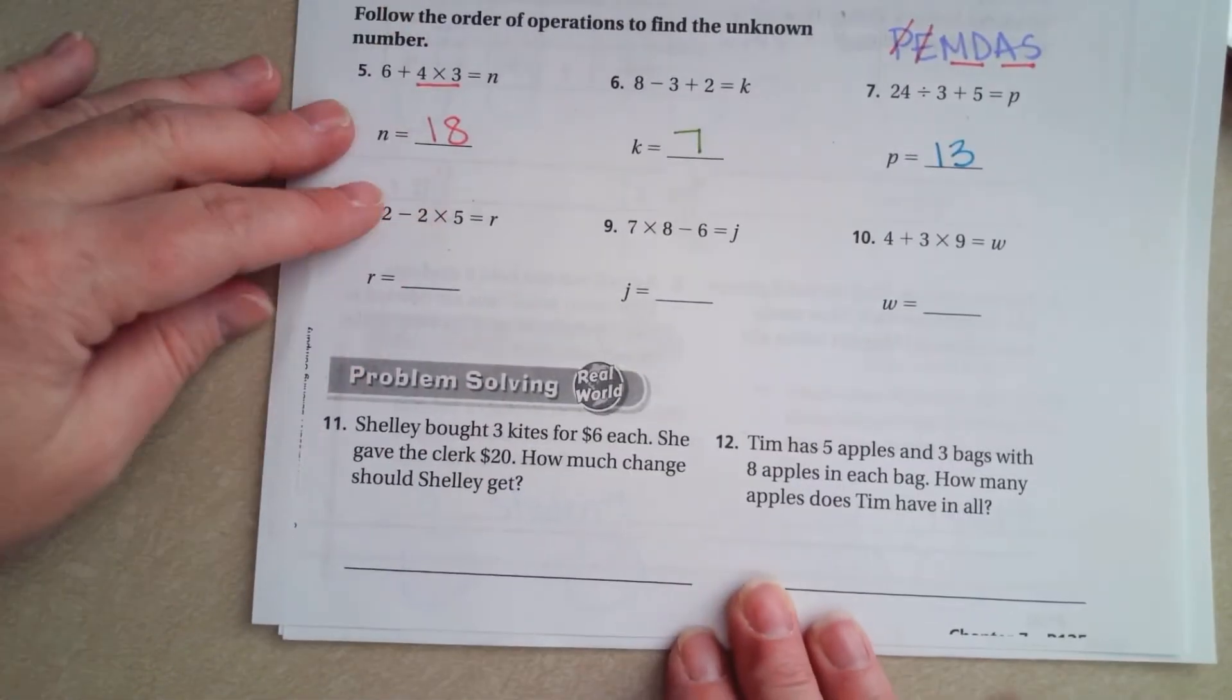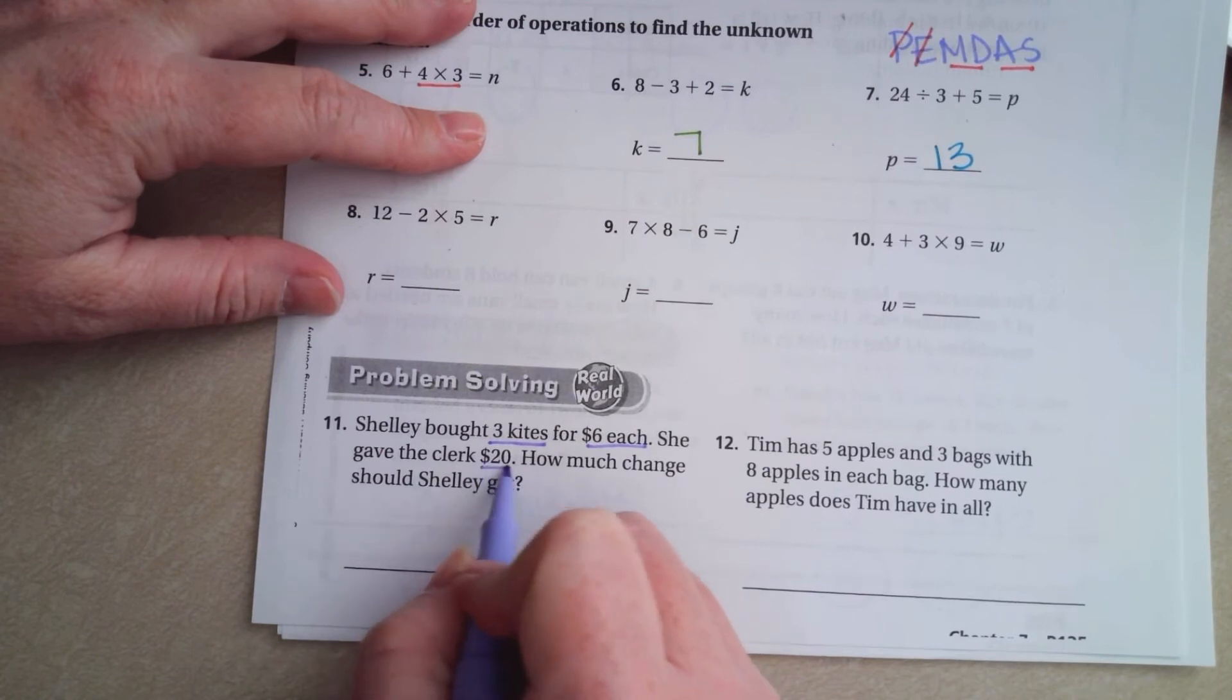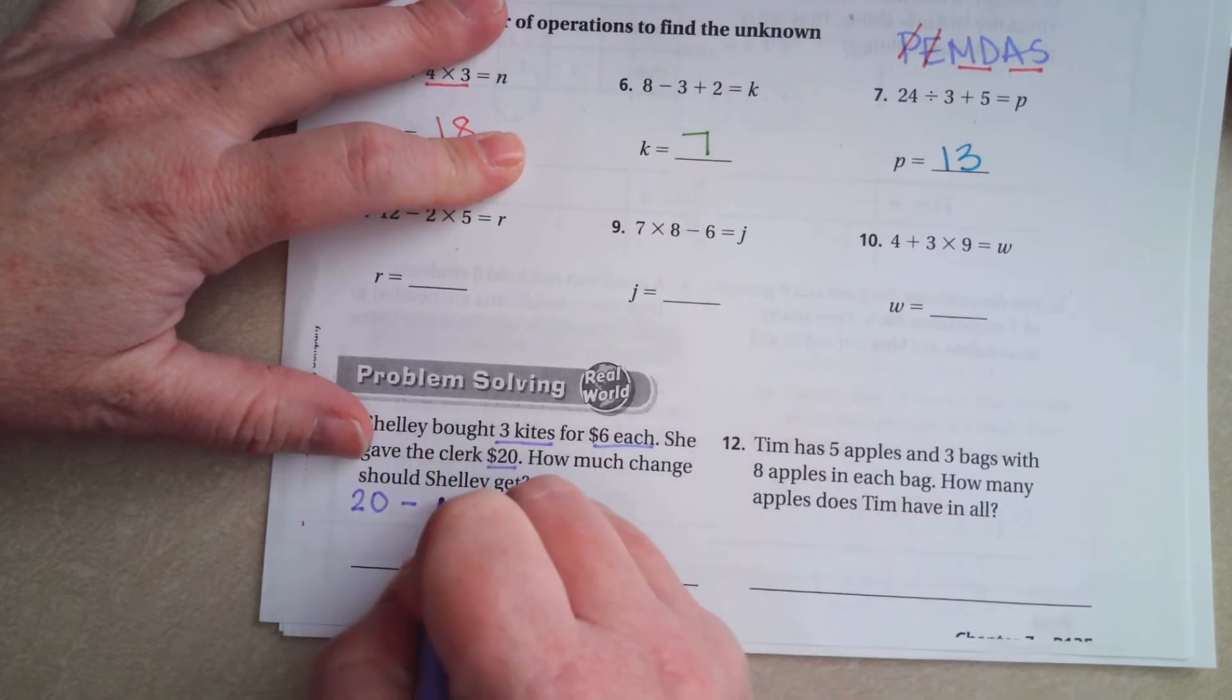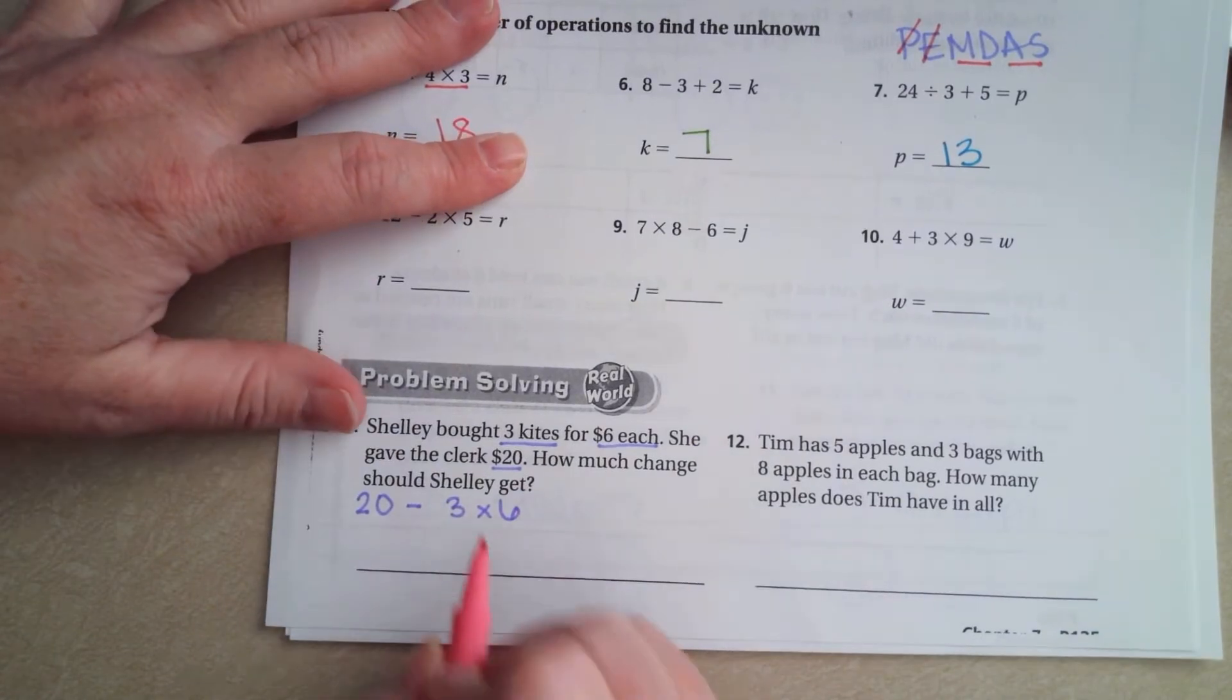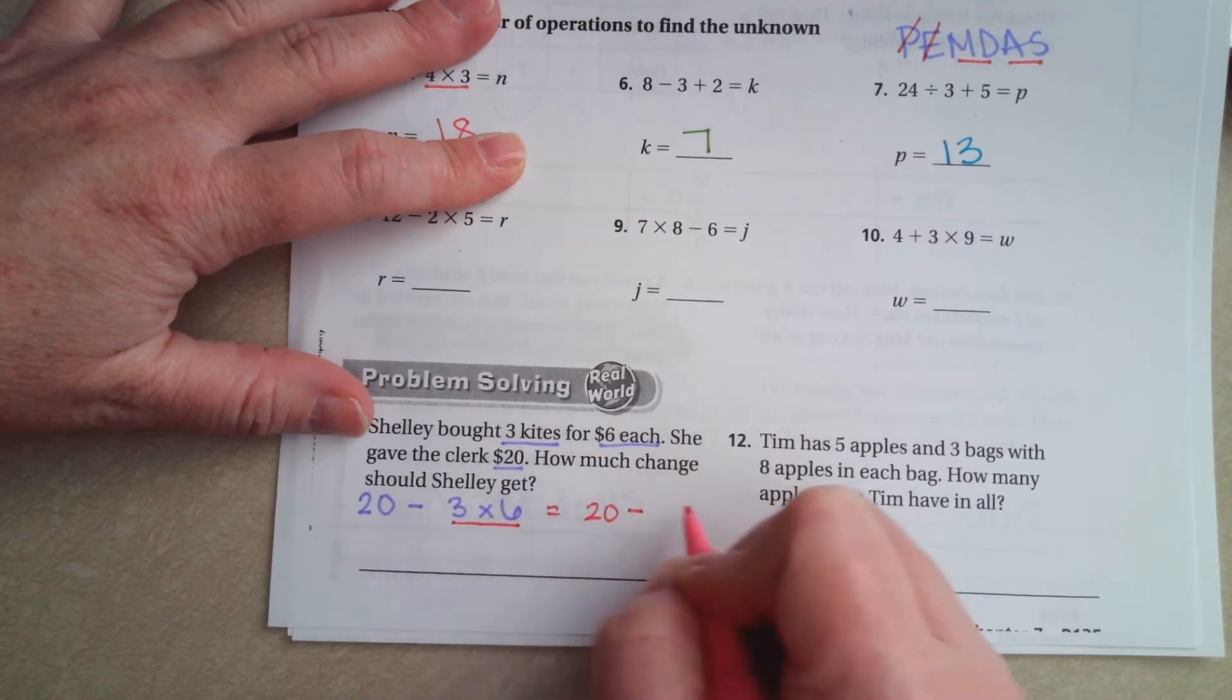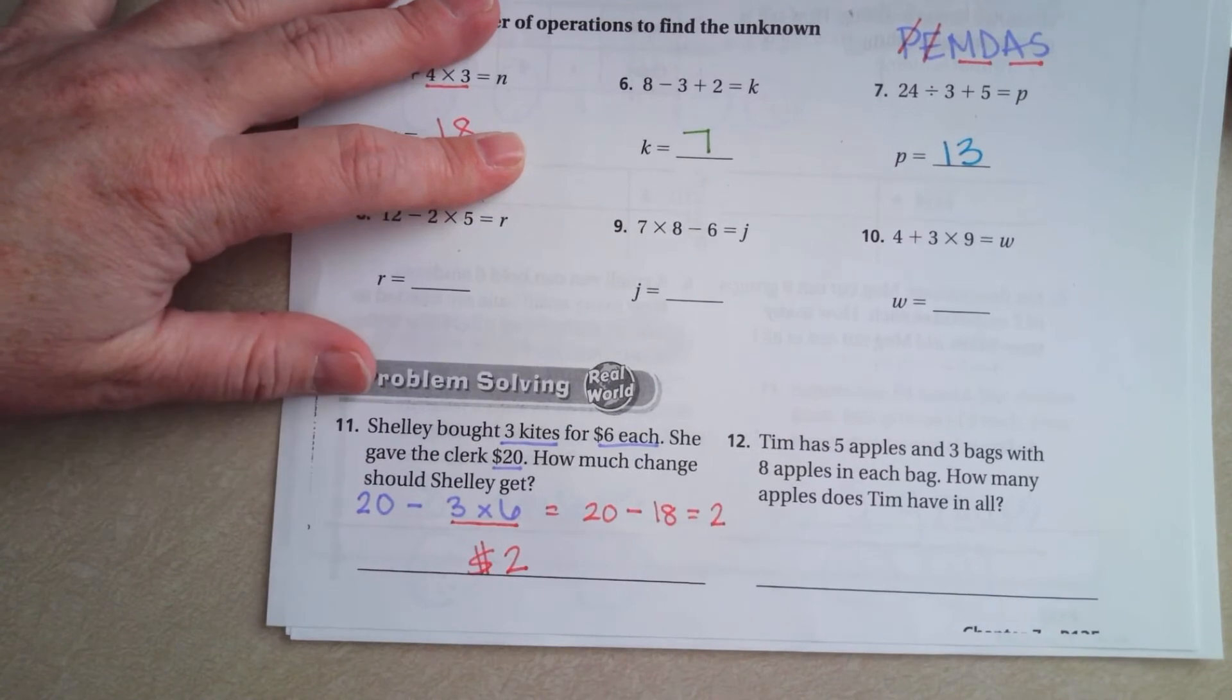We're going to go down and look at Shelly bought three kites for six dollars each. She gave the clerk $20. How much change does Shelly get? So our problem is going to be 20 minus 3 times 6. Now if we're using our order of operations we have to do this part first. So 3 times 6 is 18. So now 20 minus 18, well that's 2. $2 back.